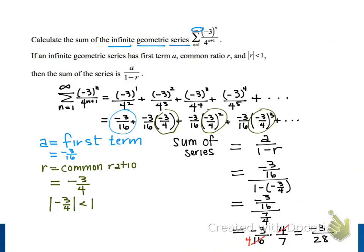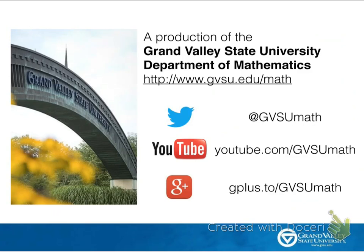Even though we're adding up infinitely many terms in our series, the result of that sum is a finite number, negative 3 twenty-eighths. And that's our final result. Thanks for watching!